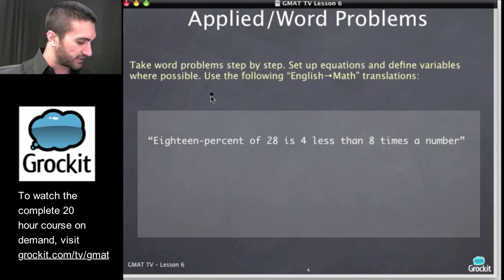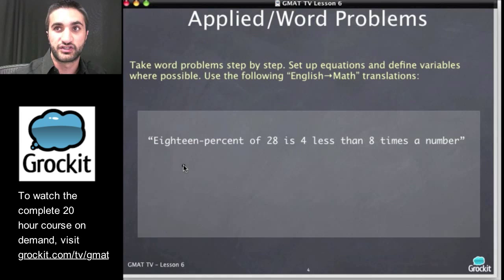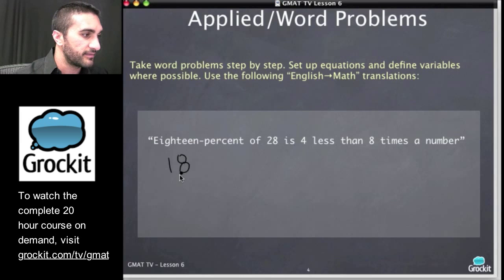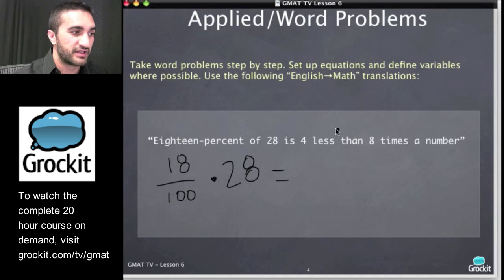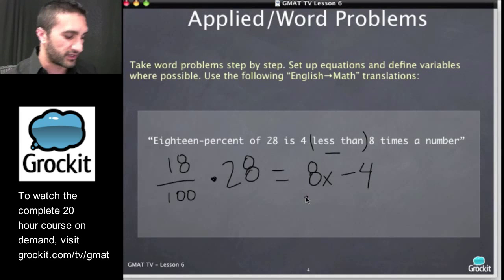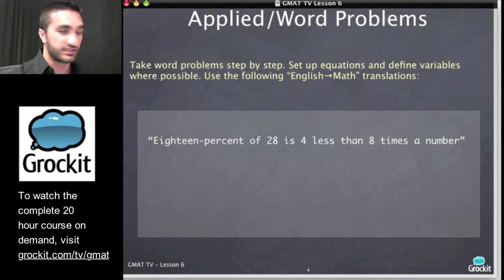Let's translate this question from English to math. 18 percent, and we're just going to translate it as we read it for the first time. 18 percent means divide by 100, 'of' means multiply, 28 means 28, 'is' should mean equal, 4 less than 8 times a number. Be careful when you see 'less than,' you just got to think about it for a second. It's 4 less than 8 times a number, so we get 8 times that number and we want 4 less than it. We don't want 4 minus 8x, that would be the other way around. So we just translated this English into math, we can work this question pretty quickly and solve for x, and that's what we want to do on these types of questions.